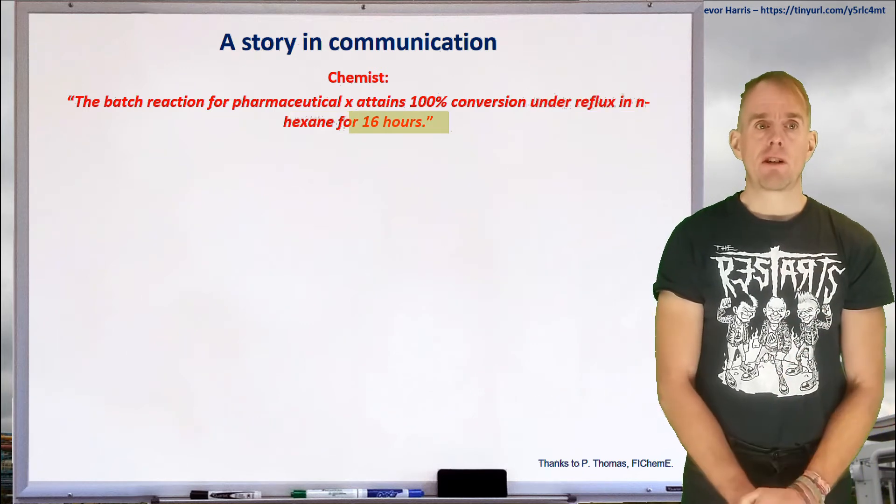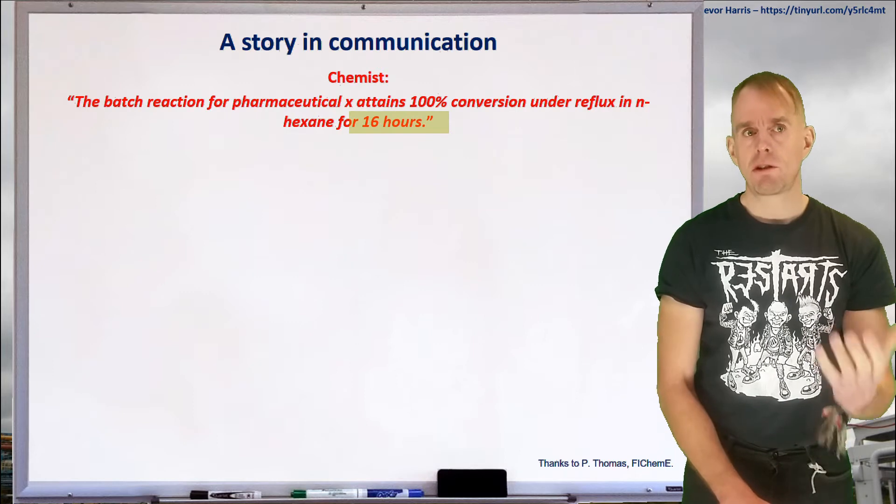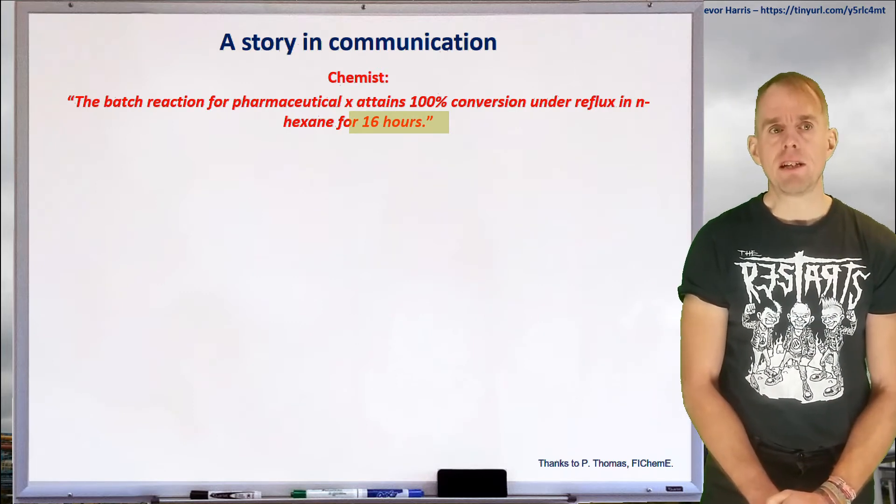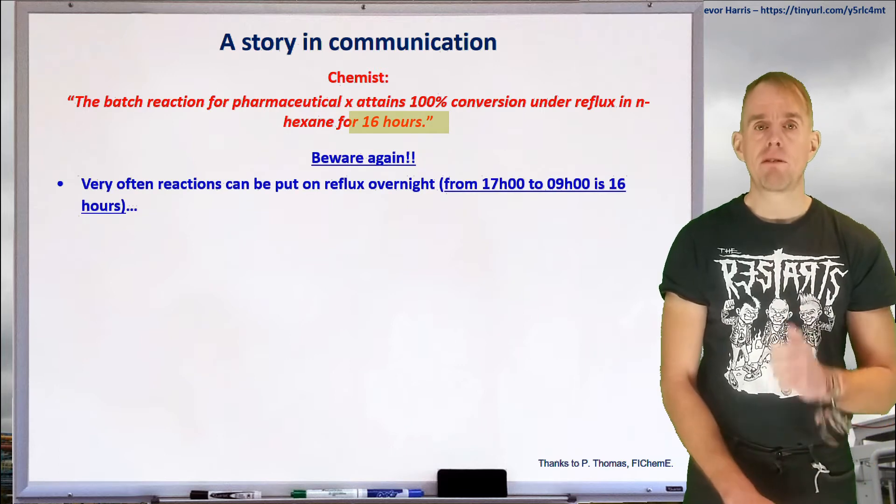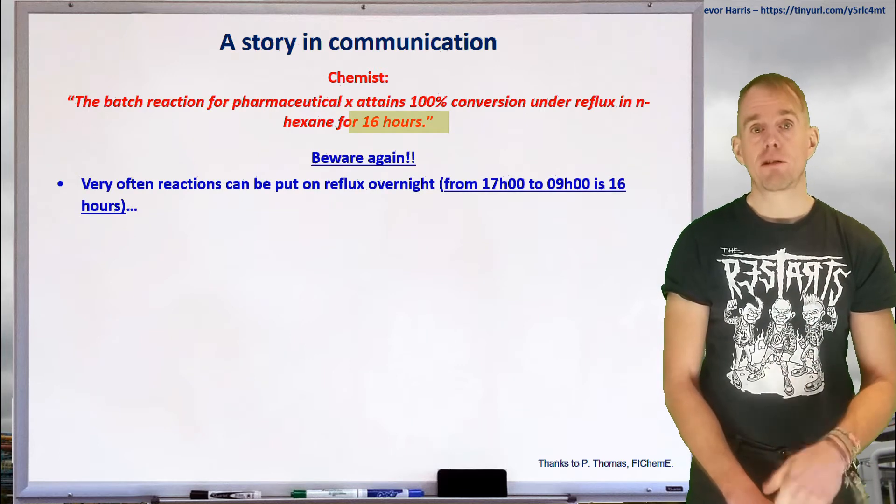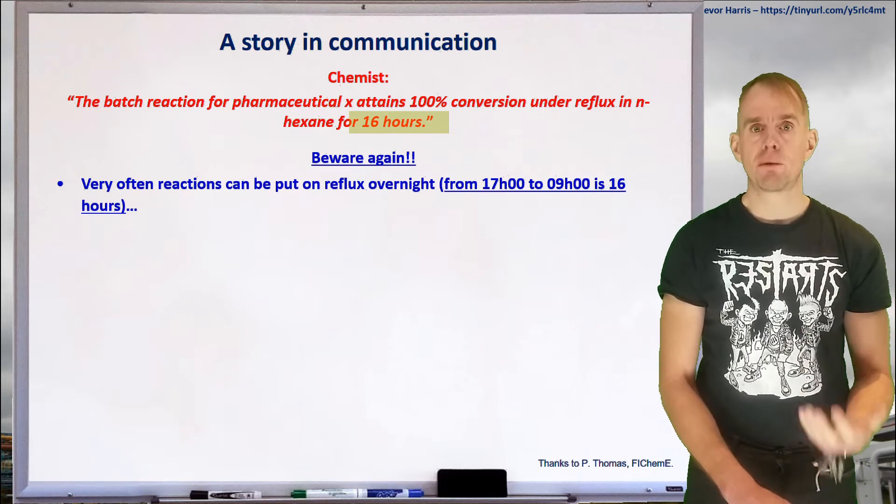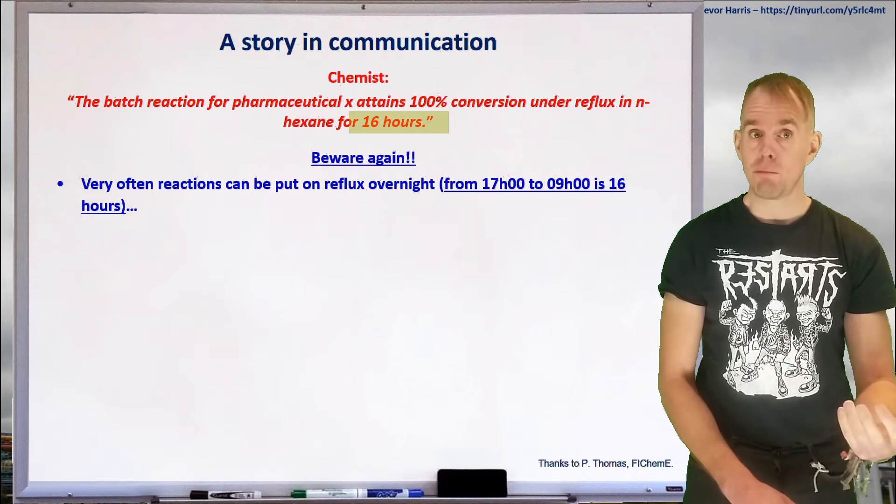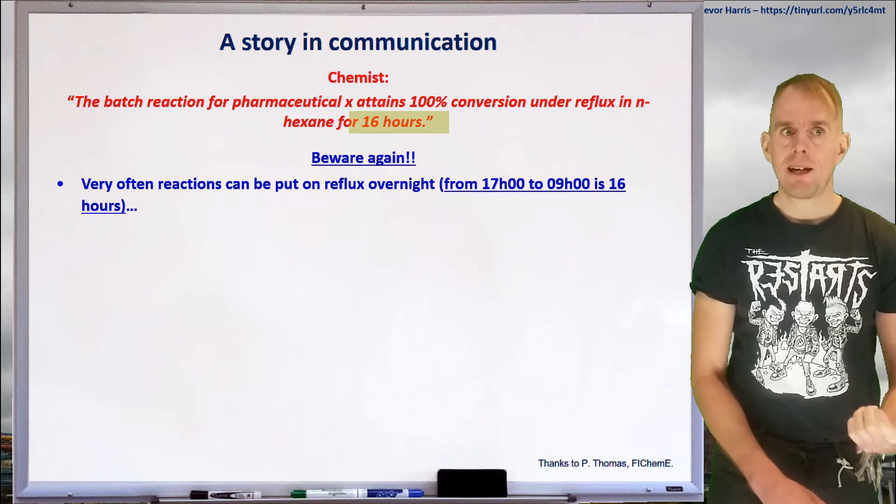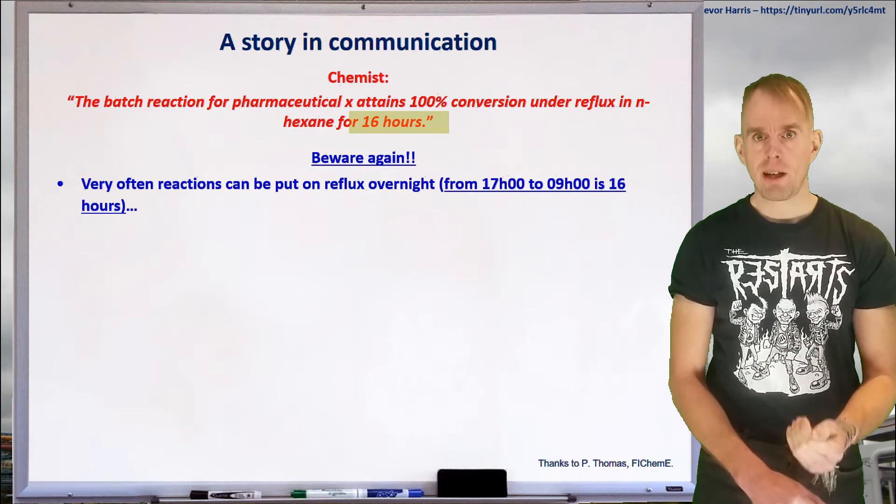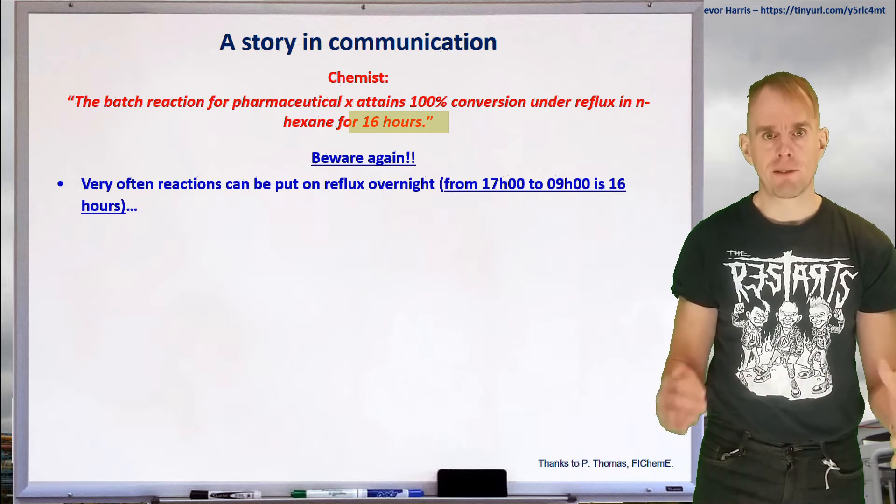Let's have a look at the reaction time. 100% conversion was attained after 16 hours. Now, if you ever see 16 hours, be very, very wary. Because if a reaction is put on to reflux overnight, you'll find that the time between 5 in the evening and 9 the next morning is 16 hours. It may be nothing to do with the kinetics of the reaction. It just happens to be the time span of the experiment.